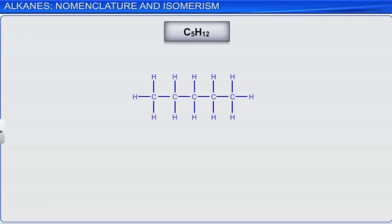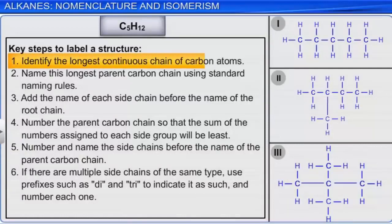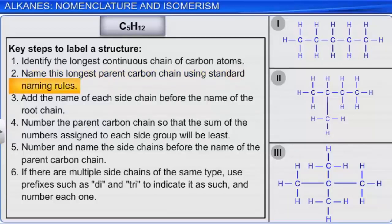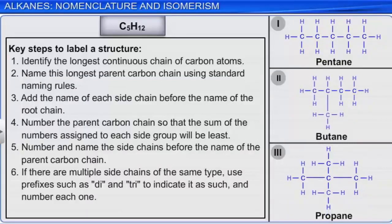Let's look at the three structures obtained for pentane, C₅H₁₂, and label them as structures 1, 2, and 3. First, identify the longest continuous chain of carbon atoms. Structure 1 contains 5 carbon atoms; structure 2 contains 4 carbon atoms; and structure 3 contains 3 carbon atoms in the parent carbon chain. Next, name this longest parent carbon chain using standard naming rules. The name for structure 1 is pentane, structure 2 is butane, and structure 3 is propane. Since structure 1 doesn't have any branches, its name is simply pentane.